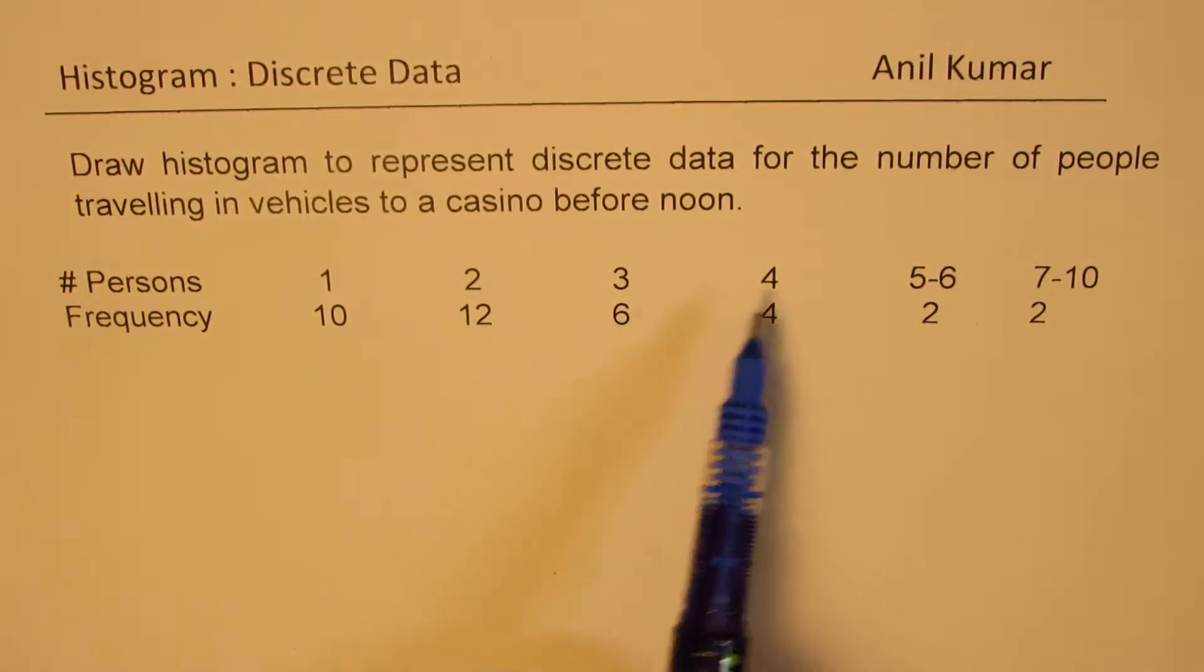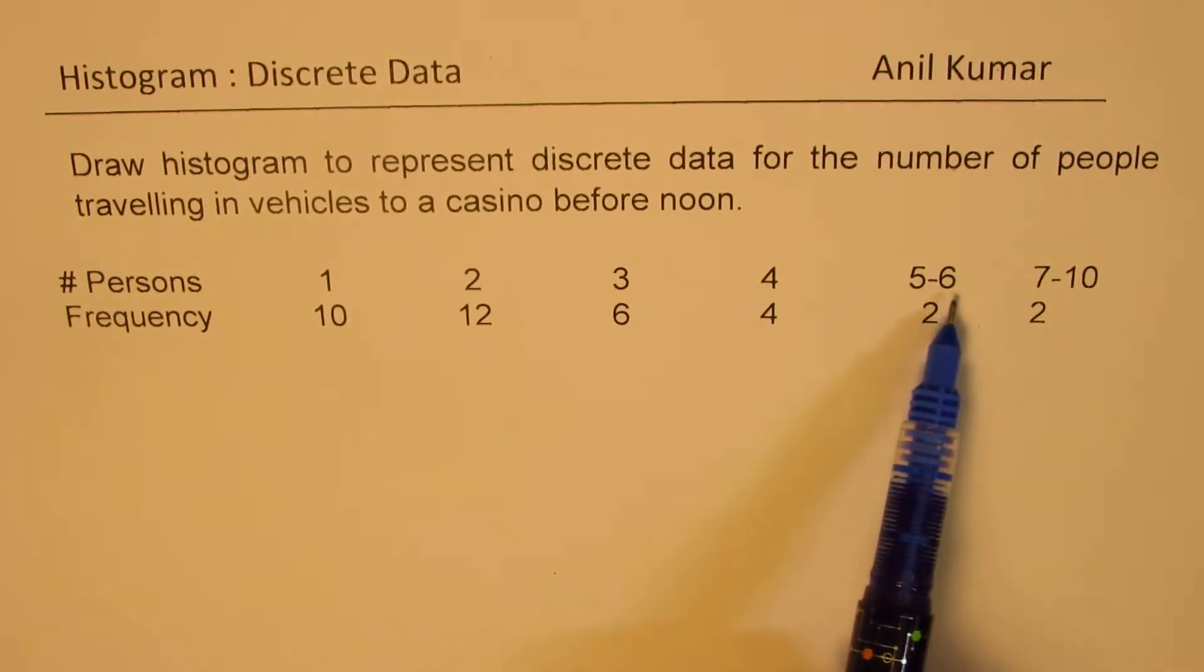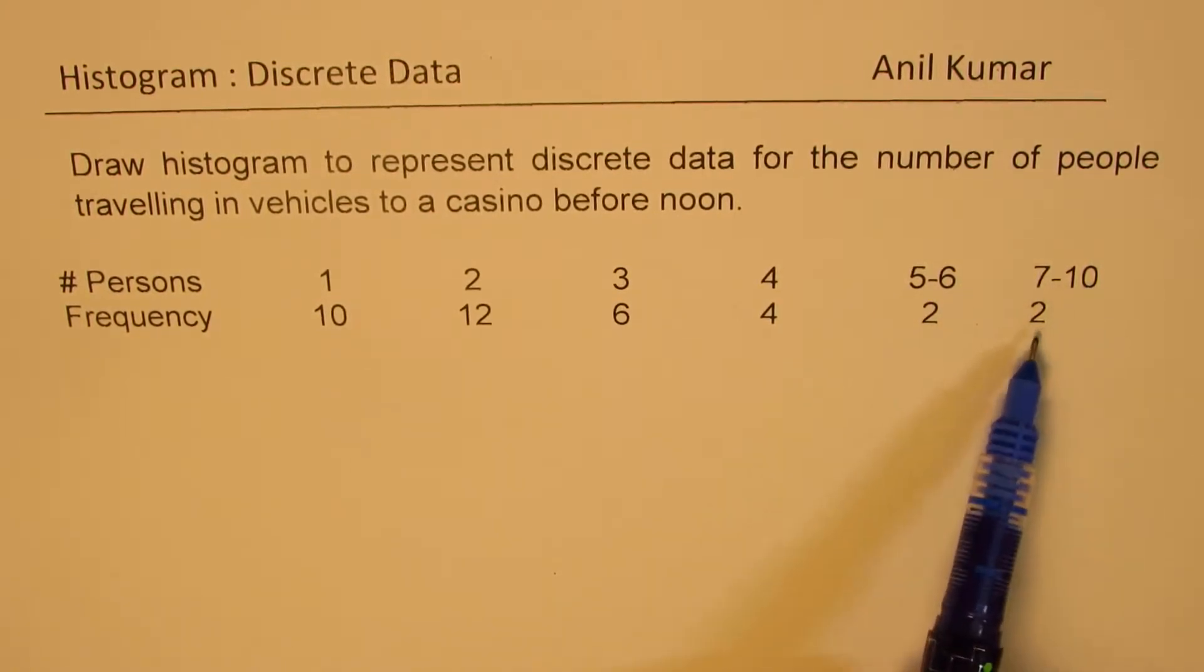2 persons were seen in 20 vehicles, 3 persons in 6, 4 in 4, 5 to 6 in 2, 7 to 10 in 2. So that is the information given to you. You need to sketch a histogram.